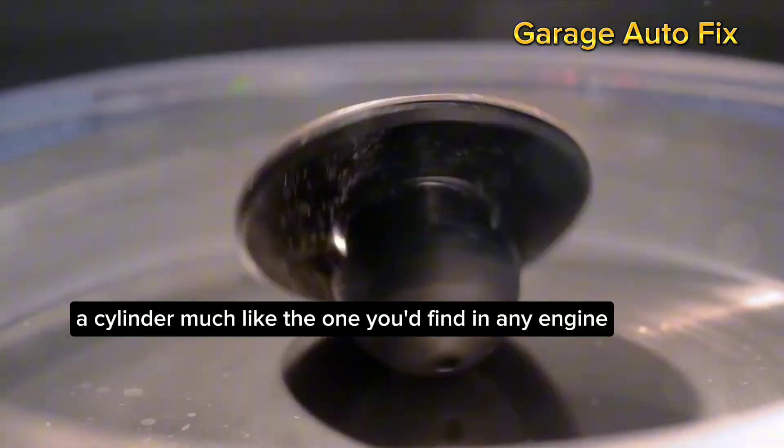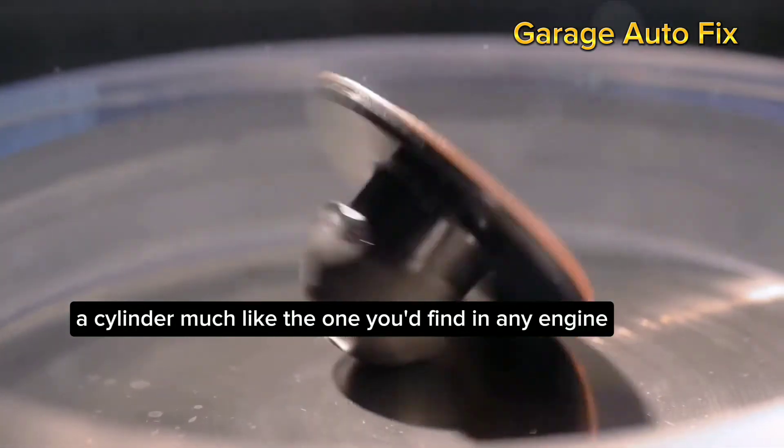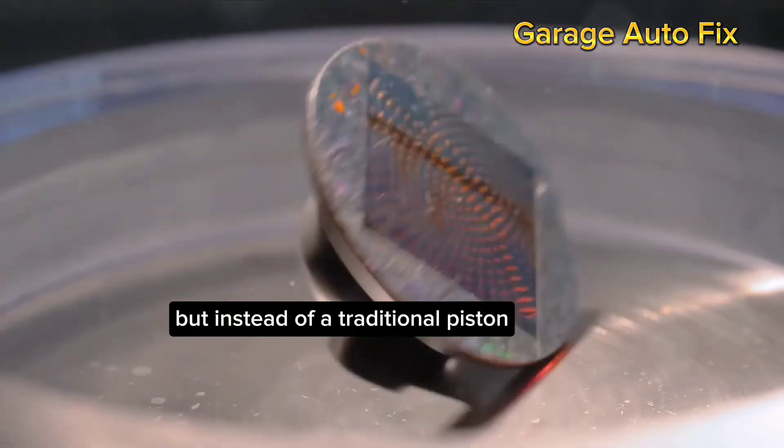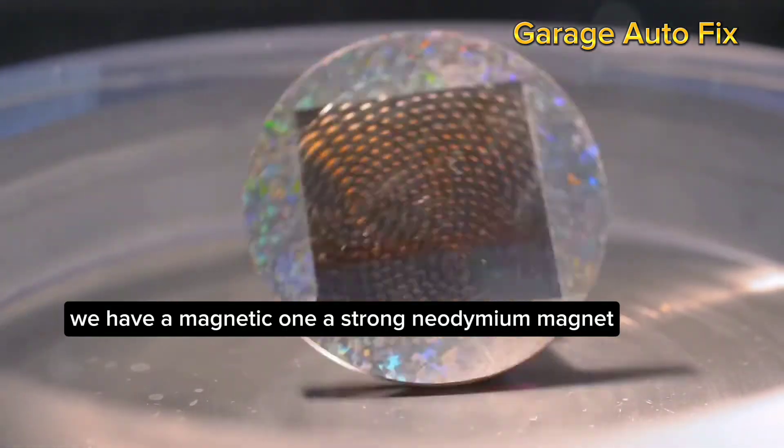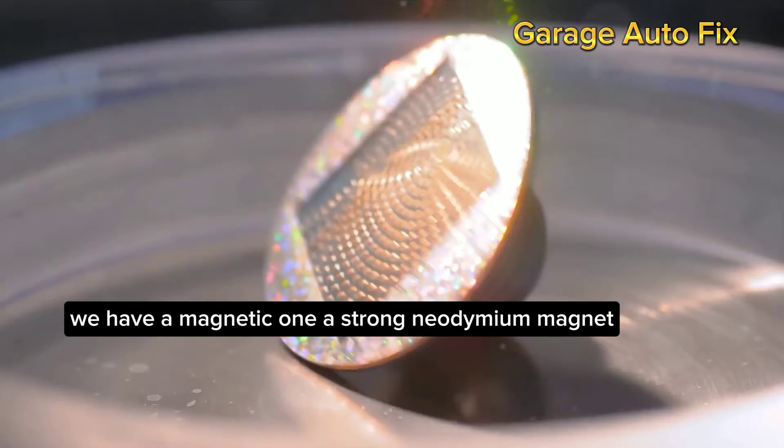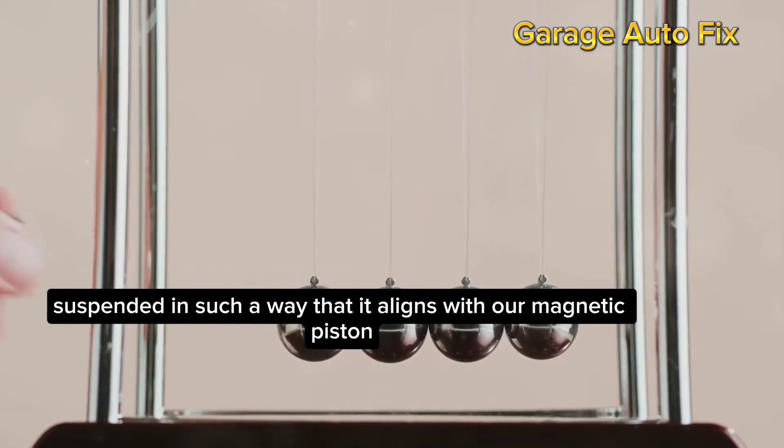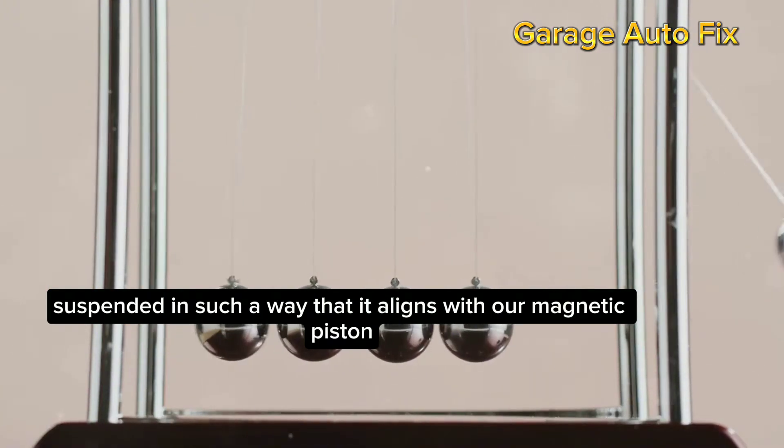Picture this: a cylinder much like the one you'd find in any engine. But instead of a traditional piston, we have a magnetic one, a strong neodymium magnet. Above it, another magnet suspended in such a way that it aligns with our magnetic piston.